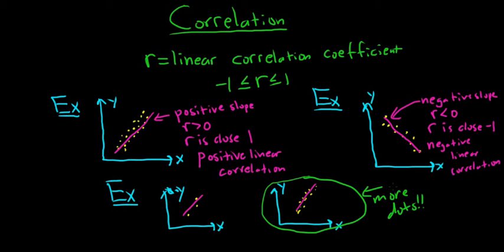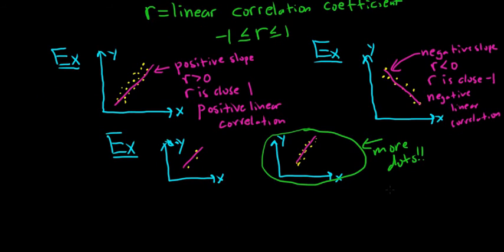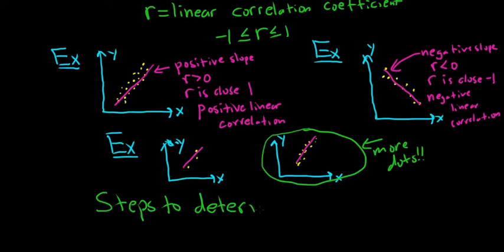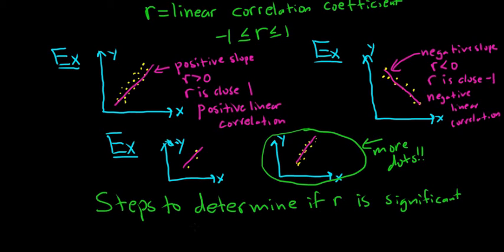In order to quantify that mathematically, we use something called a critical value. There are a few steps you have to follow to determine whether or not you have a strong straight line pattern. When we say we have a straight line pattern, we say r is significant — it's the same thing. So the steps are to determine if r is significant. If someone says r is significant, that means there is a straight line pattern.